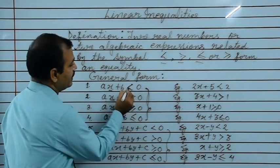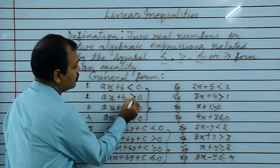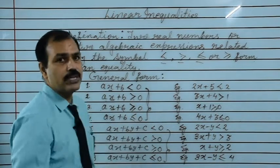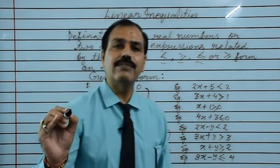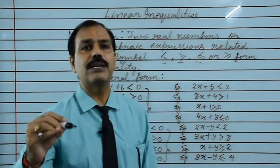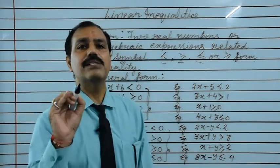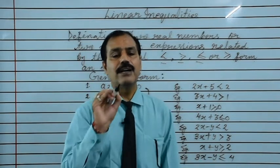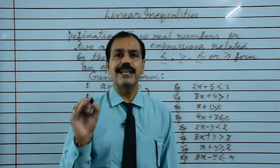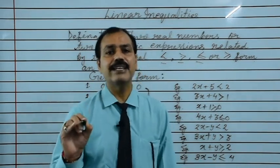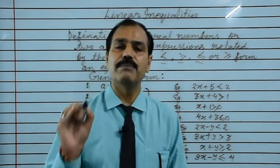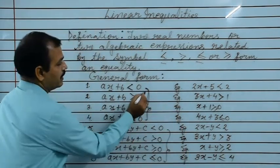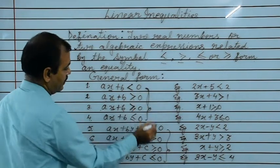Why is it called inequality? Because it does not have an equal sign. Suppose an equal sign is given, then it becomes an equation. If we put an equal sign, it becomes an equation. The symbols greater than, less than, greater than equals to, or less than equals to represent inequality.